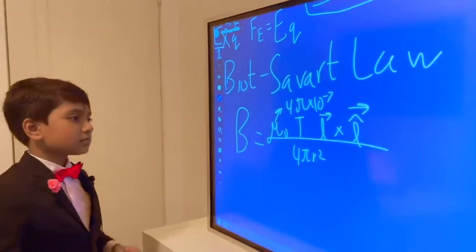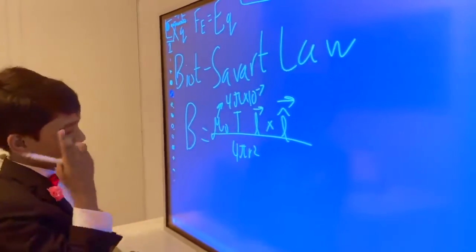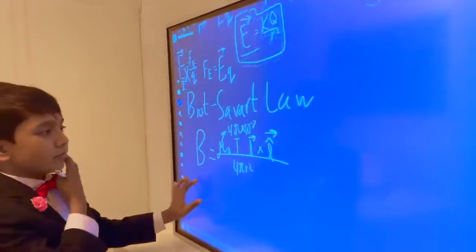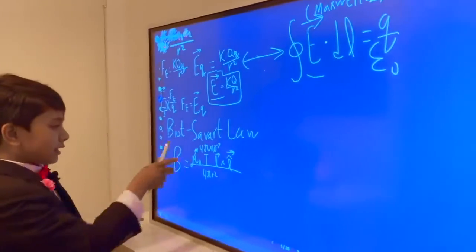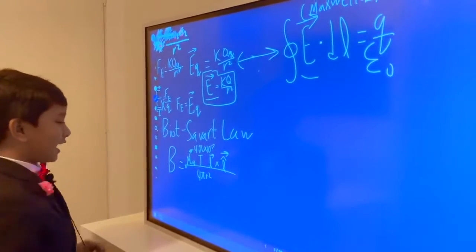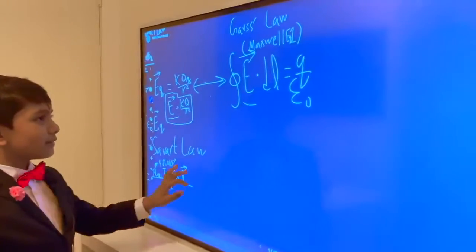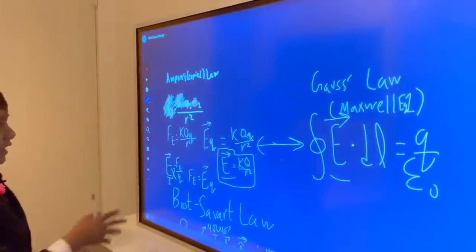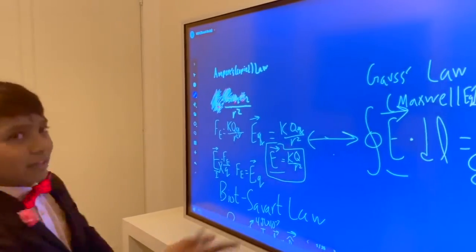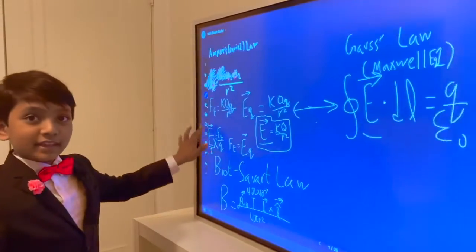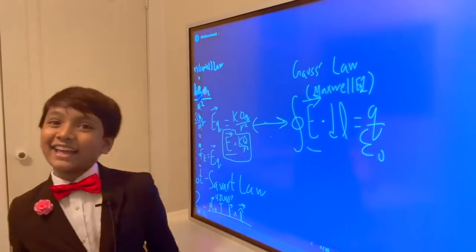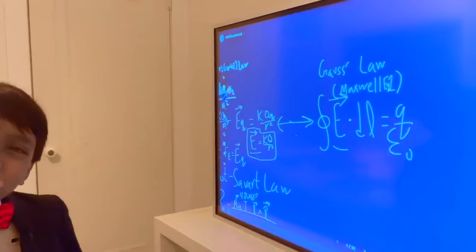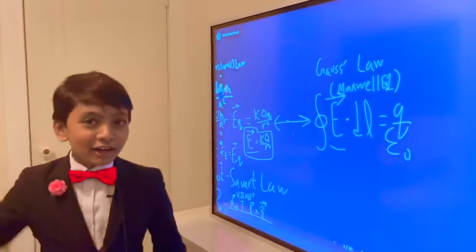Anyway. This is what we have, the Biot-Savart law. Wait, can't we just cancel that? Okay, we're not getting into that. And that is talking like magnetic Coulomb's law. But is there a way to get like magnetic Gauss law?